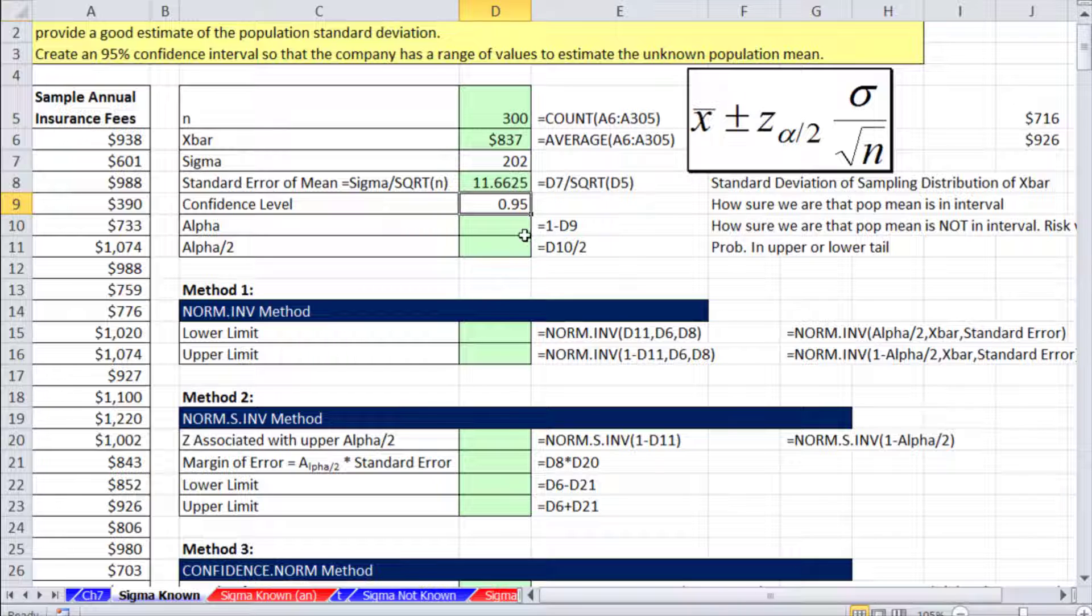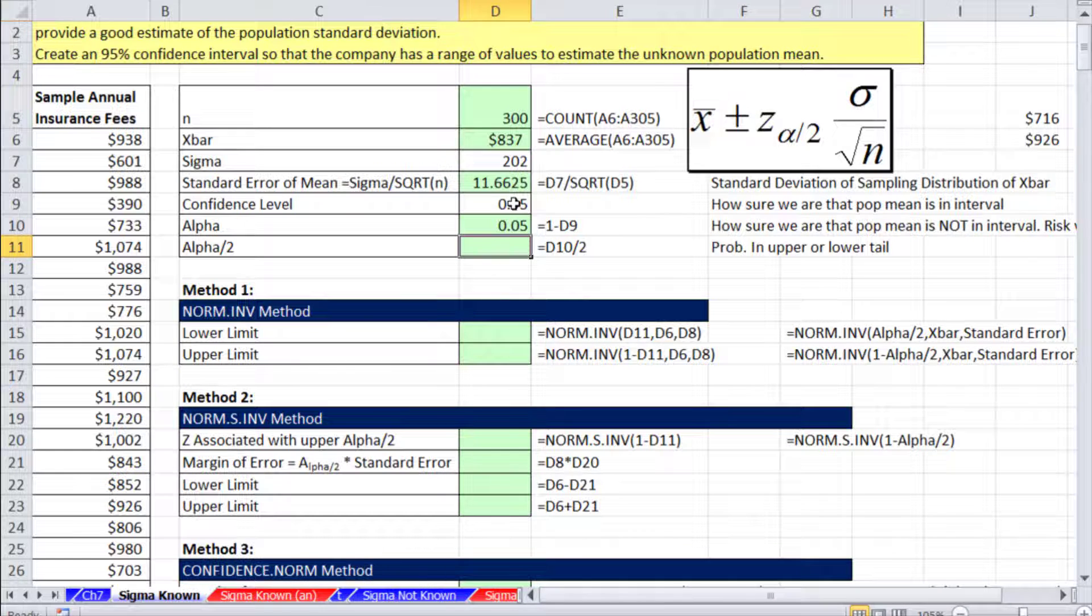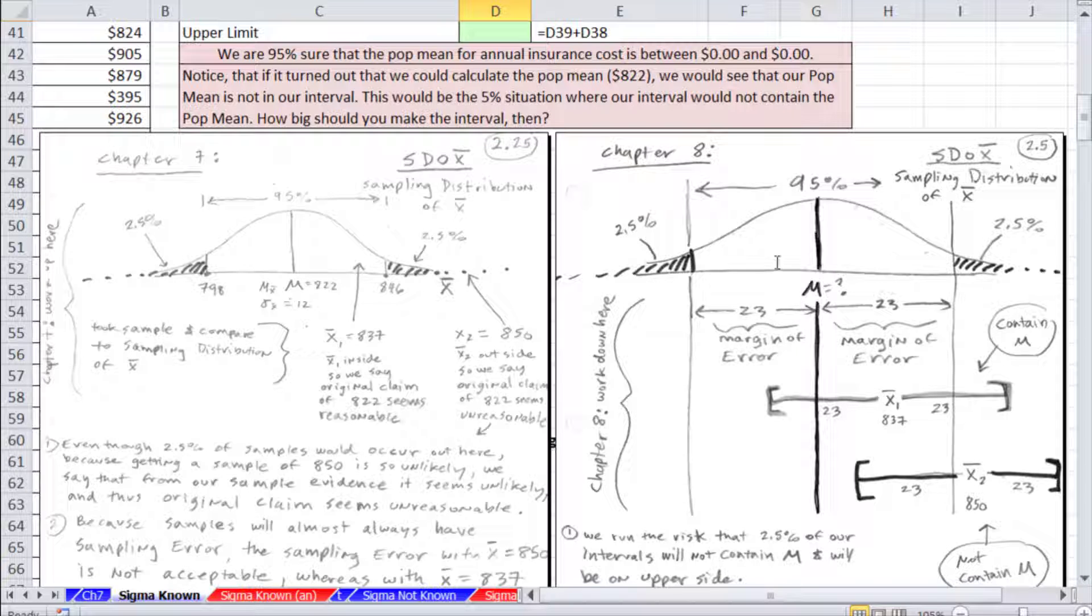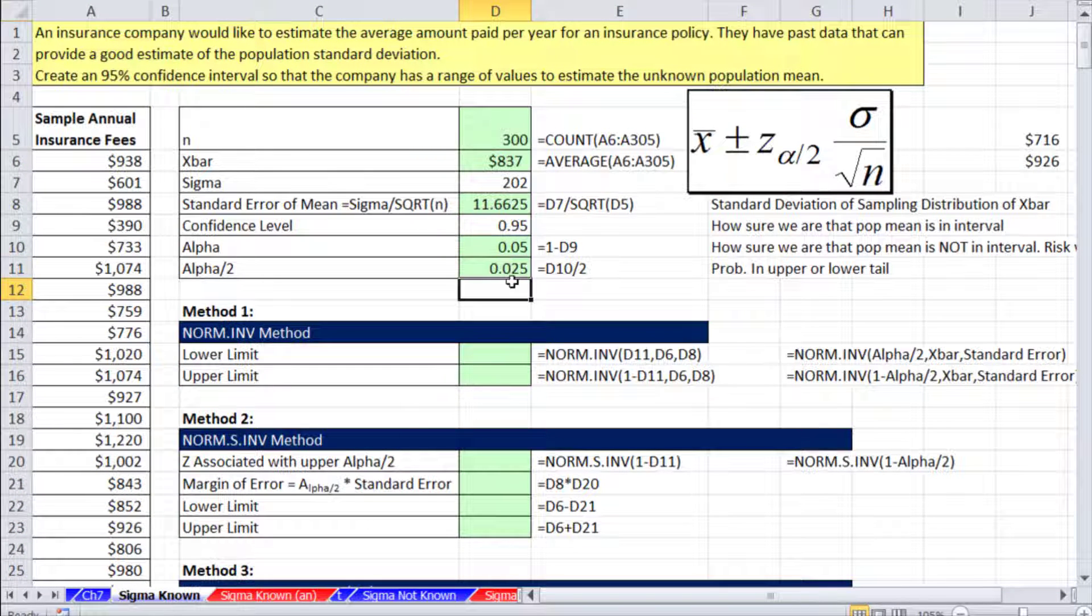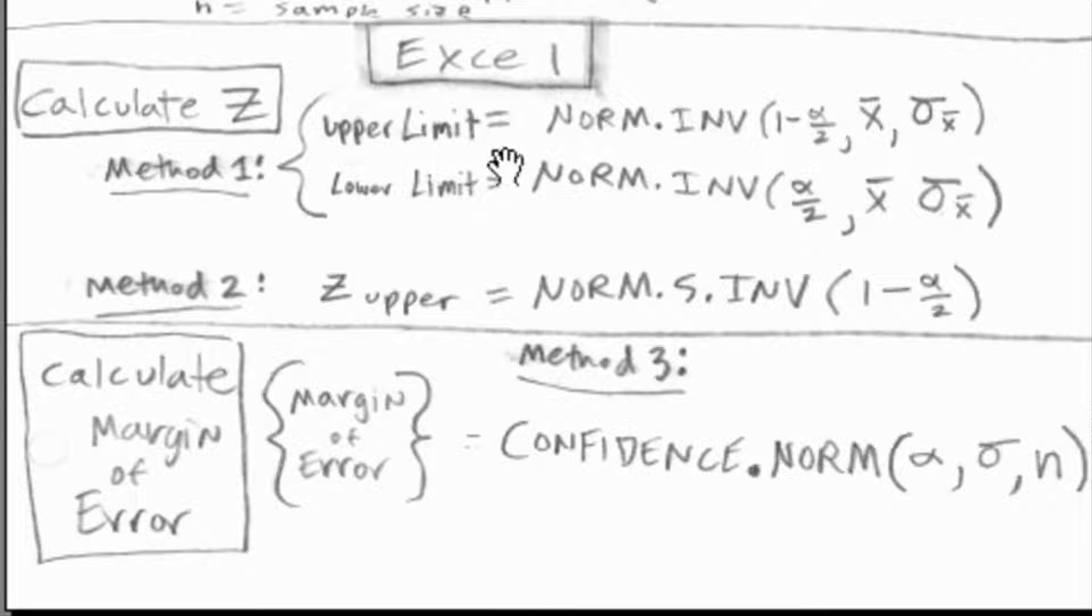Our confidence interval is going to be 0.95. We can get our alpha from that, equals 1 minus. And alpha divided by 2. The z on the upper end is always, for a confidence interval, a z_α/2. Because 95% needs to be in the middle, and we need to chop our risk that the population parameter is not in our interval a little bit on either side. So that is alpha divided by 2. We need the z up here, α/2, and we'll use that probability to help us get our z. Now, we're going to do three methods. We saw in our last video, page 6, a summary of our three methods using Excel.